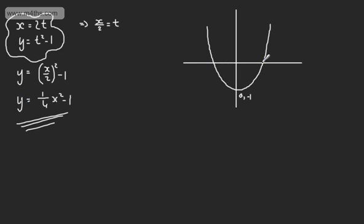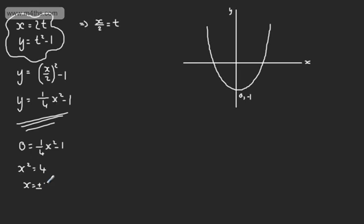Let's consider the x-axis intercepts where y = 0: 0 = ¼x² − 1, so x² = 4, giving x = ±2. So we have the points (−2, 0) and (2, 0). We now have y = ¼x² − 1 in Cartesian form.